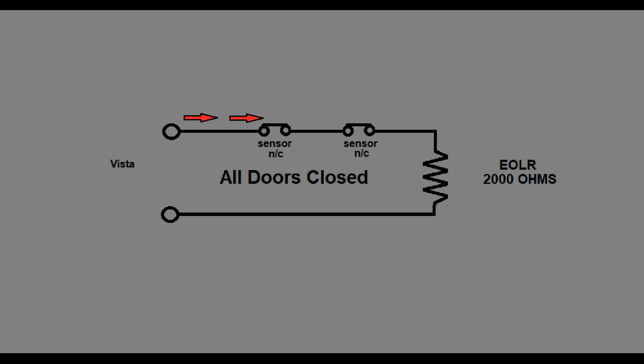To visualize this, let's follow the current through the circuit. Current, like most things in this universe, will seek the path of least resistance. With all the doors and windows closed, your sensor contacts will allow current to flow through your end of line resistor, and your Vista panel will say everything's okay. But open up a sensor, current will stop flowing, and your Vista panel will see an open, triggering an alarm.